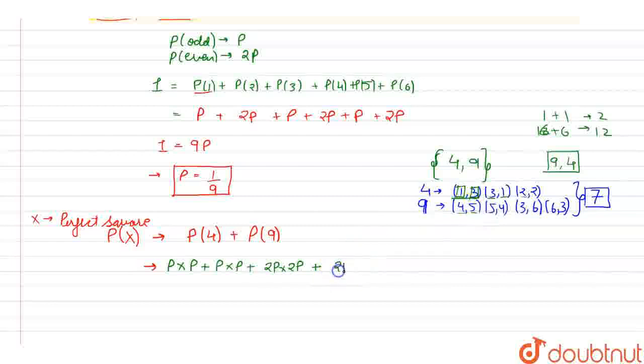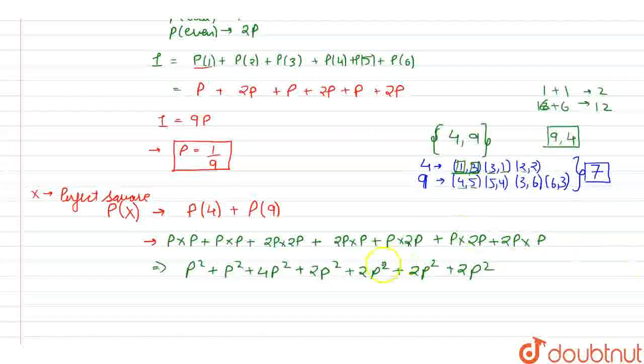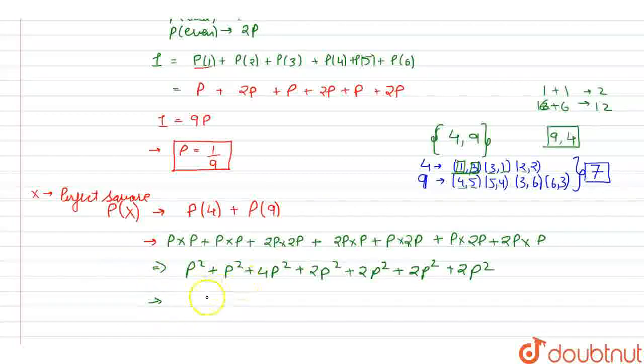For 9, we will say it will be 2p multiplied with p plus p multiplied with 2p, plus this will be again p multiplied with 2p plus 2p multiplied with p. This summation will come out to be, if we write, it will be p² plus p² plus 4p² plus 2p² plus 2p² plus 2p². Now this can be written as, or this will be equal to 14p².